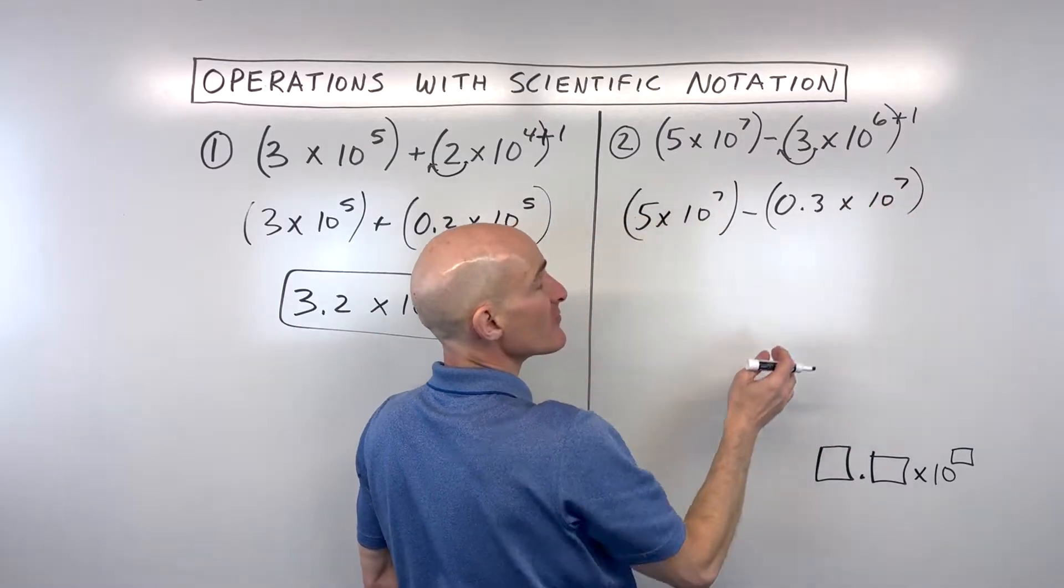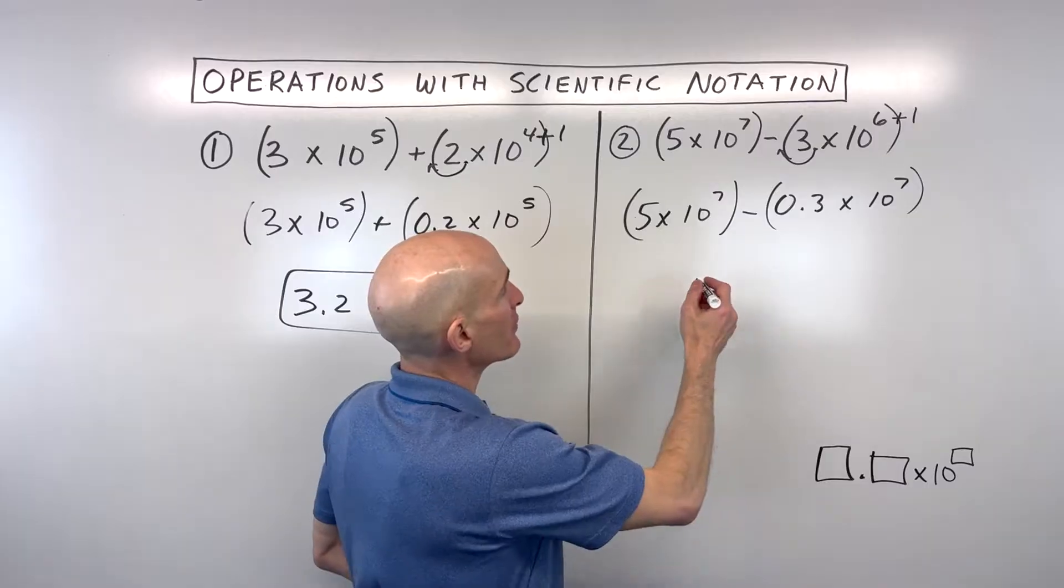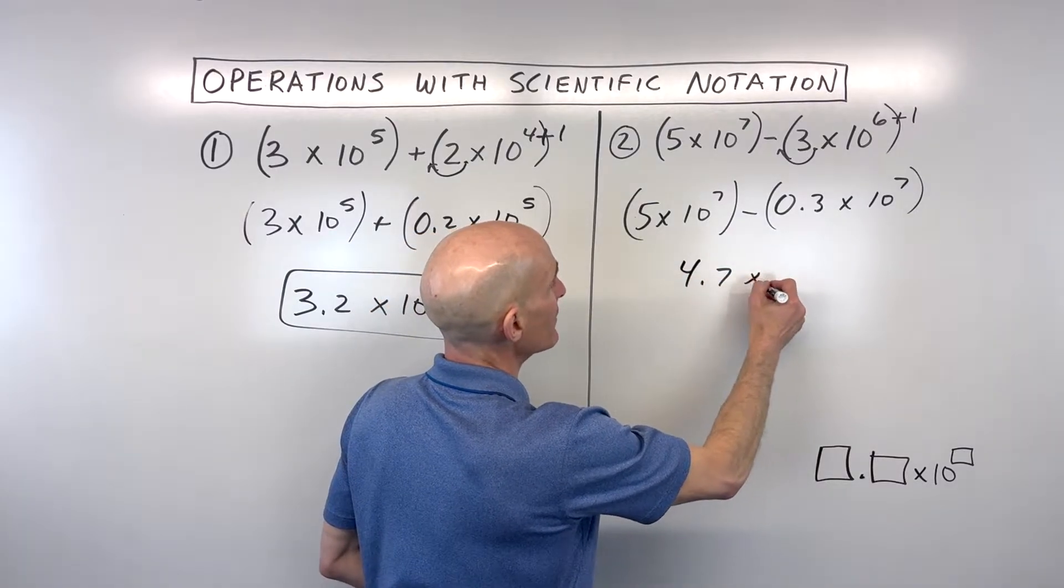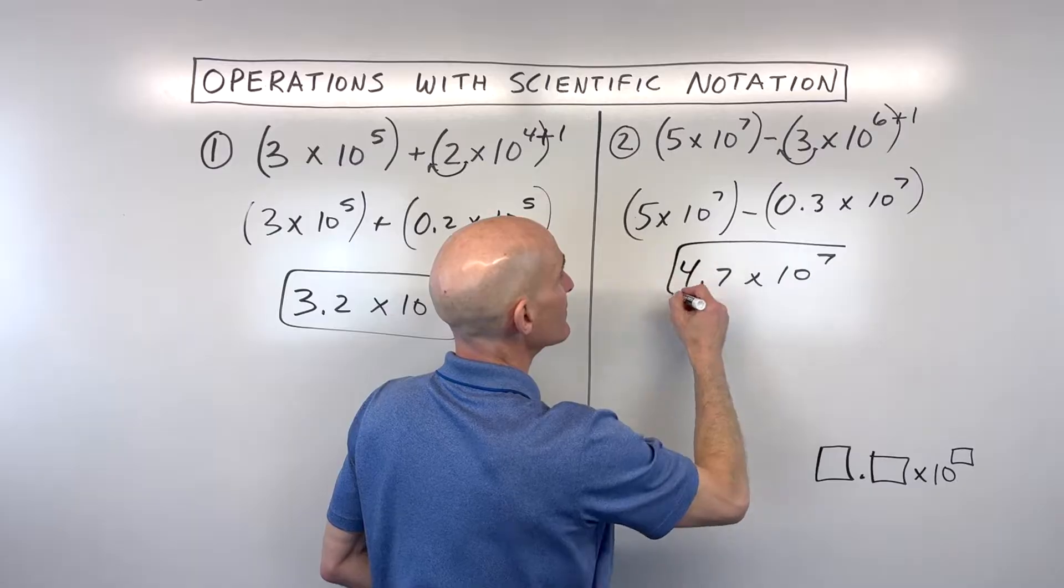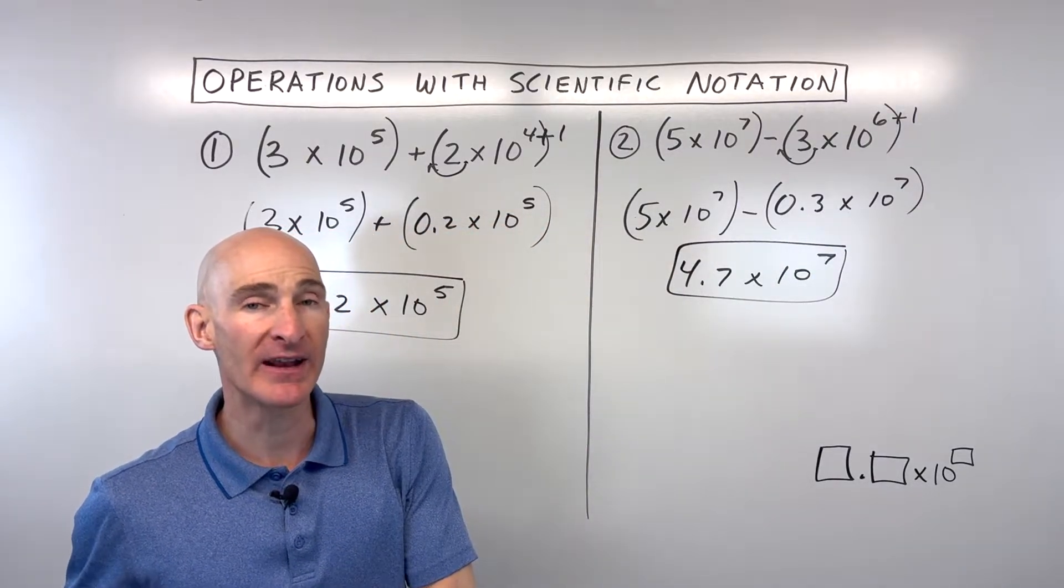And now they're the same orders of magnitude, the same powers of 10. So I can say 5 minus 0.3, which is 4.7 times 10 to the 7th. And we subtracted the two numbers. Let's take a look at multiplying and dividing next.